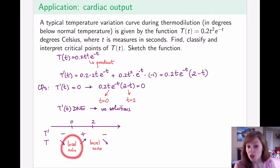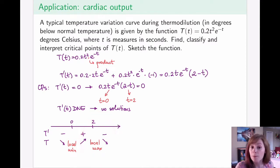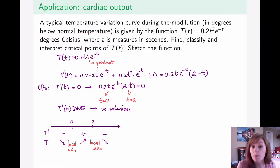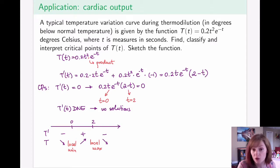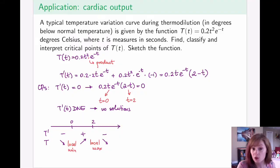The local minimum at T = 0 is not surprising — that's when the injection first happens. The local maximum at T = 2 means that in 2 seconds we have the greatest difference between the measured temperature and the normal temperature. That's when the cooling-down effect is the most noticeable — in 2 seconds after the injection, the temperature drops the most.